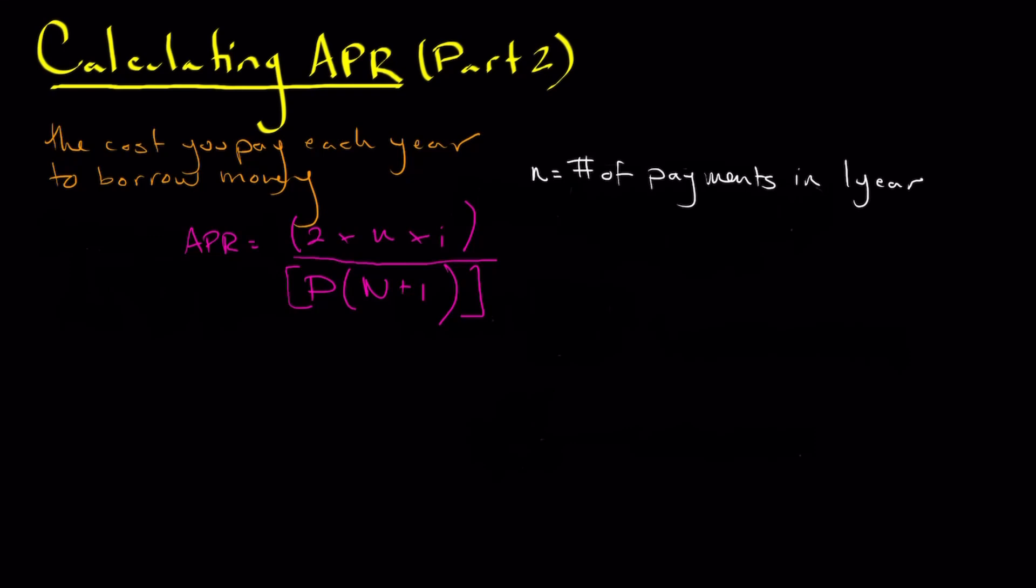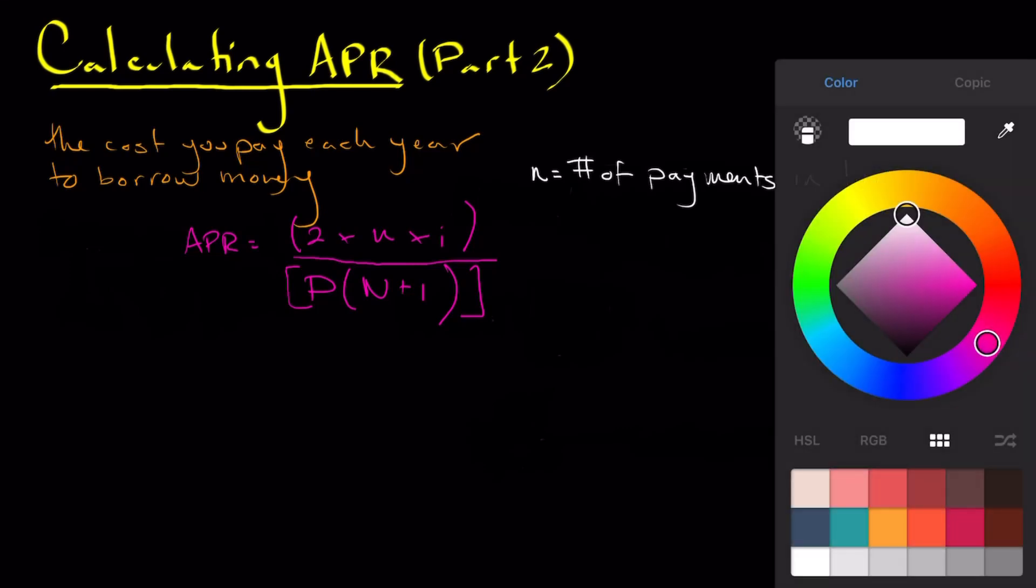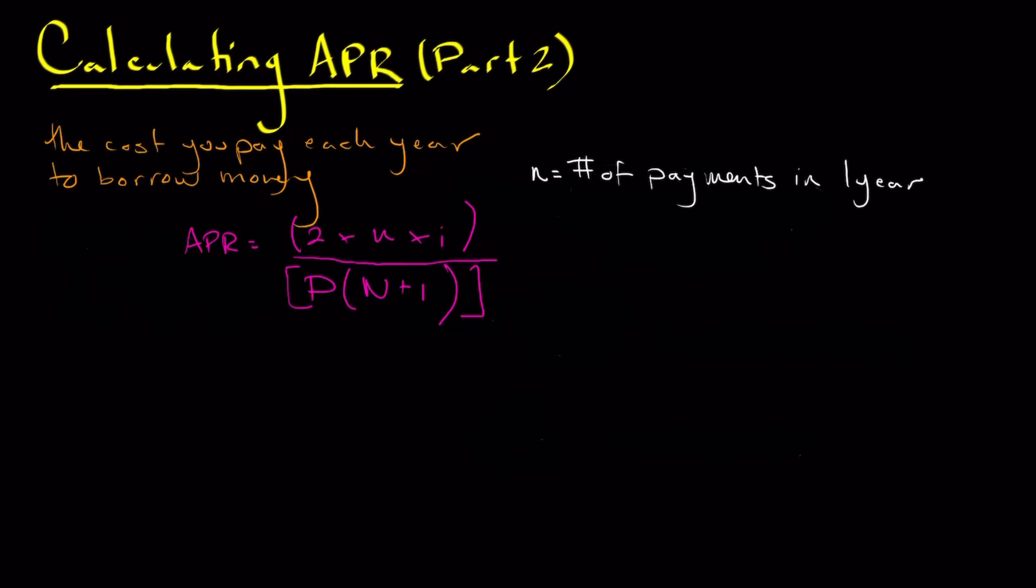So the small n is actually the number of payments in a year period. So this is commonly 12 most loans work off of a monthly cycle. But if you're using something a little bit less common, then obviously you'll want to take that into consideration with this formula here.